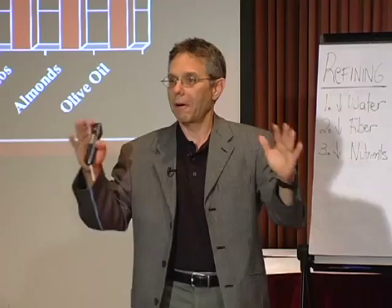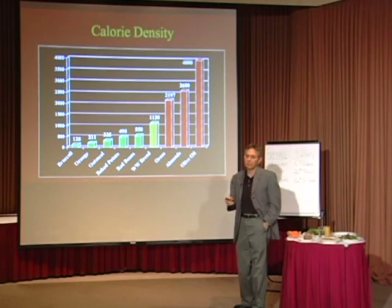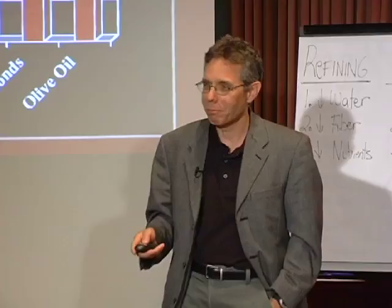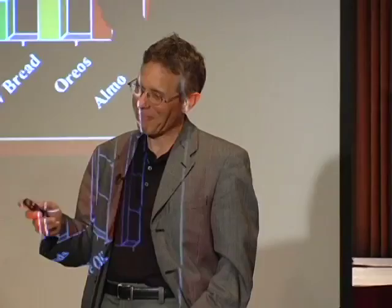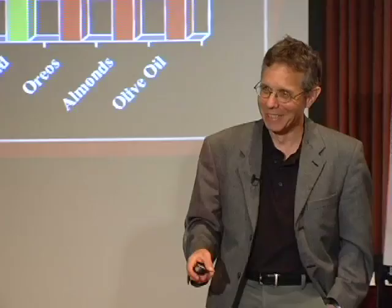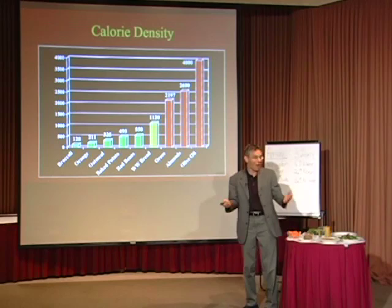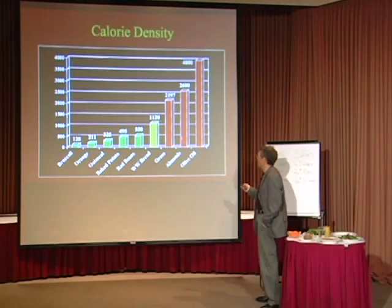Now, let's think for a minute. Which side of the chart do you think the foods are easier to overeat on — the left side or the right side? The right side. We don't get a lot of broccoli bingers coming through here. In fact, I think they died out in the Neanderthal time — they were sitting eating their broccoli and a dinosaur got them. How hard is it to overeat on broccoli? It's pretty tough. How hard is it to overeat on Oreos and almonds? Right.